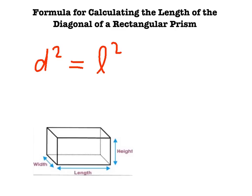I'm using a cursive L, so nobody mistakes my L for a 1. Plus W squared, which represents the width of the rectangular prism squared, plus H squared. And H represents the height of our rectangular prism.